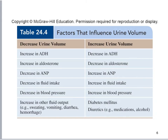Factors that influence urine volume include ADH and aldosterone, which affect the amount of urine produced. A decrease in ANP — atrial natriuretic peptide — decreased fluid intake, decreased blood pressure, and an increase in other fluid output such as sweating, vomiting, diarrhea, and hemorrhage all influence urine volume. These factors have opposite effects on each other.